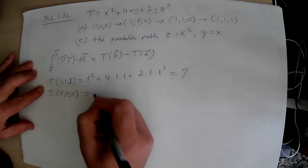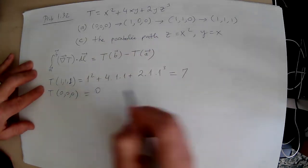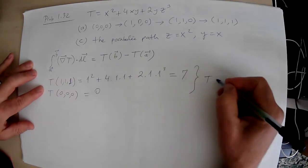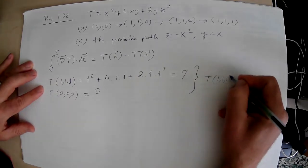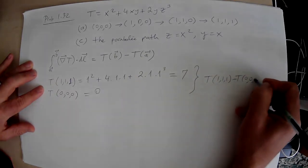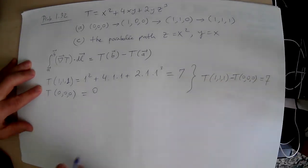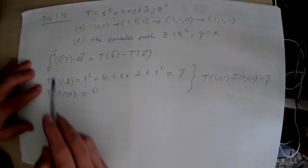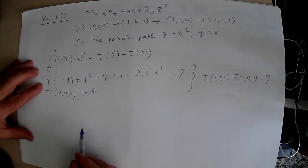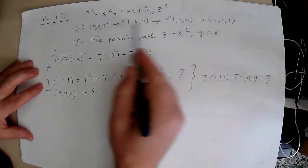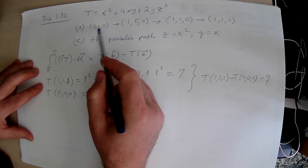T(0,0,0) is obviously zero. So the difference, T(1,1,1) minus T(0,0,0) is seven. So that's the right-hand side. The left-hand side, I need to first calculate the gradient and then use this path in part A.